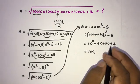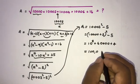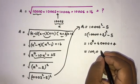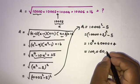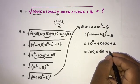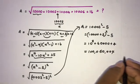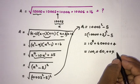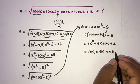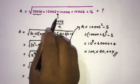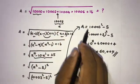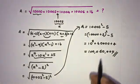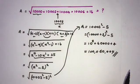The answer is one hundred million, sixty thousand, and four — 100,060,004. This is the value of A. If you like this video, please subscribe to this channel. Thank you for watching.